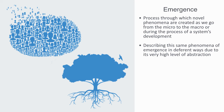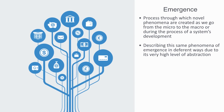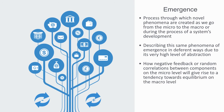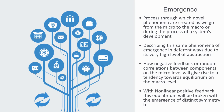To quickly summarize: in this module we've been talking about equilibrium and non-equilibrium — how closed systems, negative feedback, or random correlations between components on the micro level will give rise to a tendency towards equilibrium on the macro level. But as soon as we have an open system or non-linear positive feedback, this equilibrium will be broken as we get the emergence of distinct symmetry-breaking patterns on different levels.